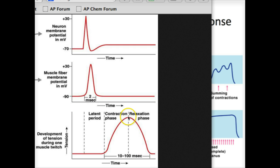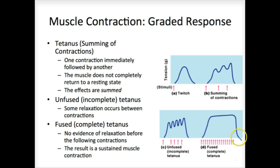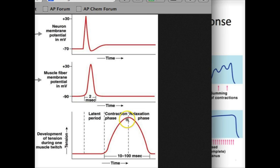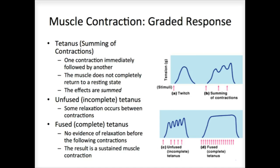Relaxation only occurs with the removal of the acetylcholine back at the binding sites within the actin on the motor end plate. As long as acetylcholine is present, we see this fusing and this grading that occurs with muscle contraction, producing very smooth movement. As soon as the acetylcholine is removed, we see this relaxation. That's basic muscle contraction.